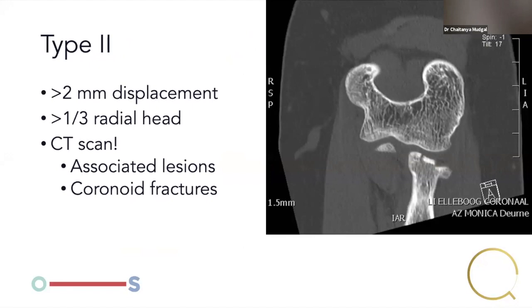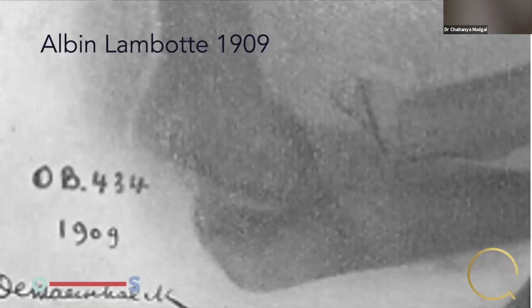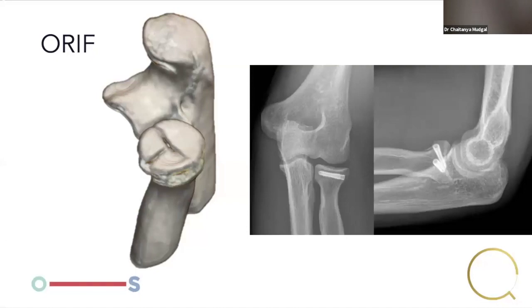Type 2 radial head fractures — by the Mason classification — have more than 2mm displacement or involve more than one third of the radial head. CT scan threshold is very low for these, not only to assess displacement but to identify associated lesions such as coronoid fractures and anteromedial facet fractures, which are very hard to see on plain X-rays. Treatment has historically included immobilization, fragment removal, or radial head resection. In the early 20th century, in 1909, the first published case of open reduction and internal fixation of radial head was published by Alban Lambotte, a pioneer of ORIF and Belgian surgeon who worked in Antwerp.